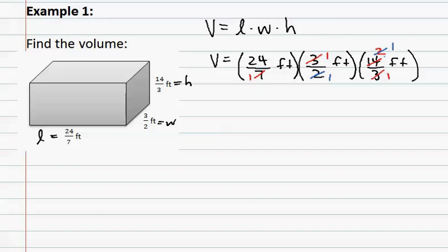I have now eliminated all the numbers to ones, so I am just left with a twenty-four on the top over one on the bottom. This will then give me an answer of twenty-four feet cubed.